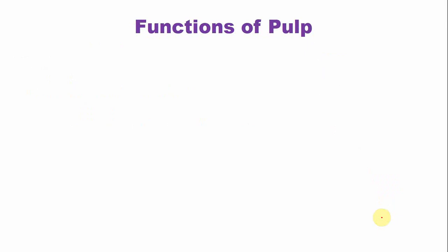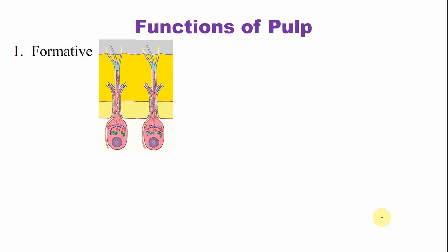What are the functions of the dental pulp? There are four main functions. Number one is the formative function. These are the odontoblasts. Odontoblasts help in the formation of dentine. Initially an unmineralized matrix is deposited that is later mineralized to form a matured dentine.